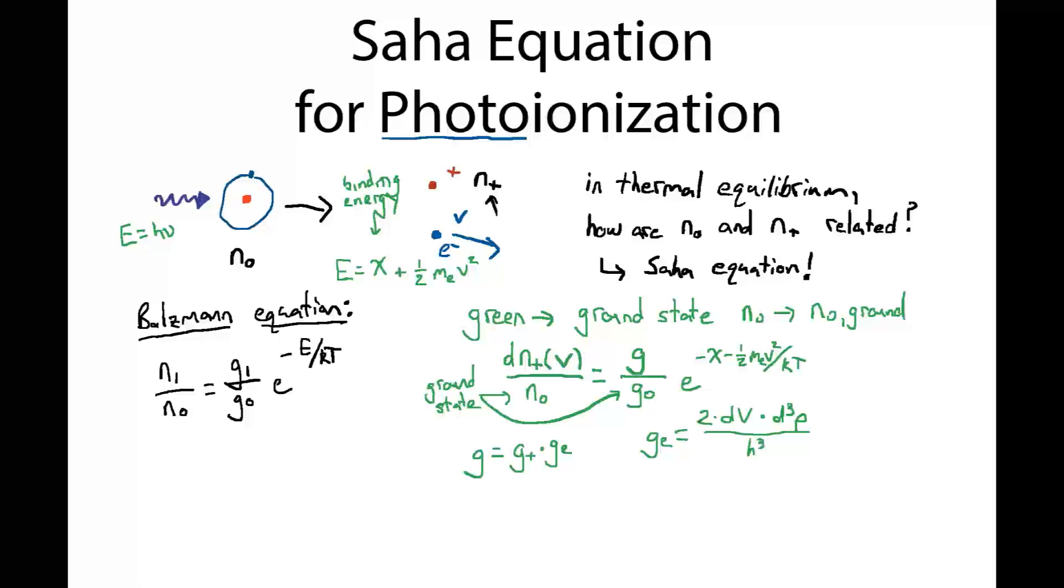So what this equation for the degeneracy is saying is that because electrons are fermions, you can't have two electrons in the same state. So for wherever an electron is, this little piece of volume dV, every electron in that box must either have a different spin state or a different momentum state. And we divide by h cubed here because of the Heisenberg uncertainty principle.